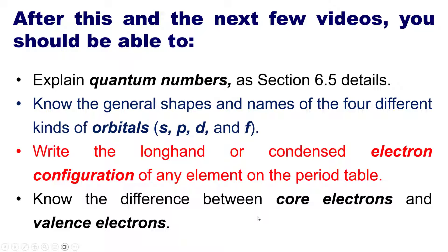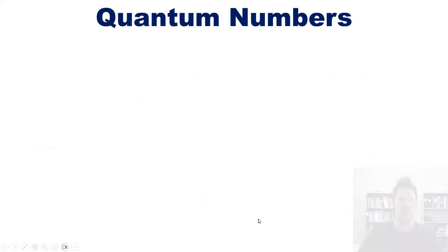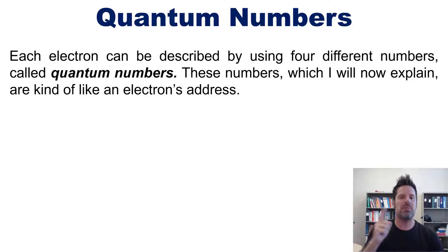Let's begin by continuing our discussion of quantum numbers. Each electron in an atom can be described by using four different numbers called quantum numbers. These numbers are kind of like an electron's address.